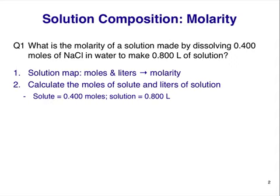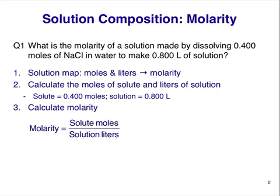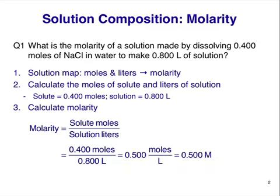This is much trickier to work out and probably not what the question writer meant. Regardless, if you see a question like this, assume the total volume of the solution is equal to the volume of the solvent. Now we can calculate molarity. The equation we use is: molarity equals solute moles divided by solution volume in liters. Inserting our numbers gives us the answer 0.500 M. The higher this number, the more concentrated the solution; the lower the molarity, the more dilute the solution.